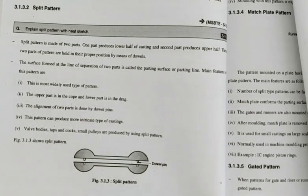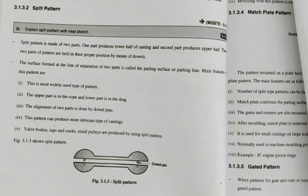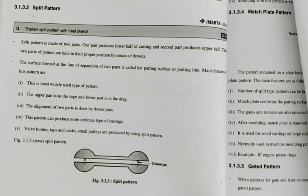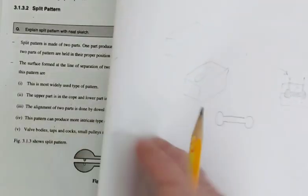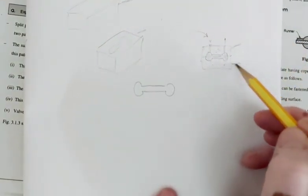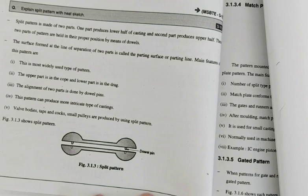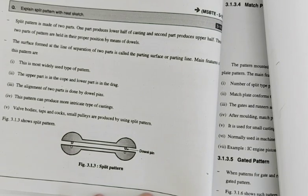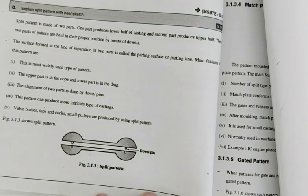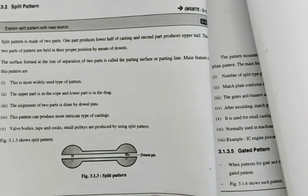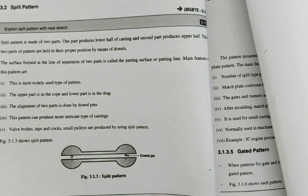Main features of this pattern: This is the most widely used type of pattern. The upper part is in the cope, and the lower part is in the drag. Cope means upper box, drag means lower box. The alignment of two parts is done by dowel pin. This pattern can produce more intricate types of castings. Examples: wall bodies, taps and cocks, and small pulleys are produced by using split pattern.